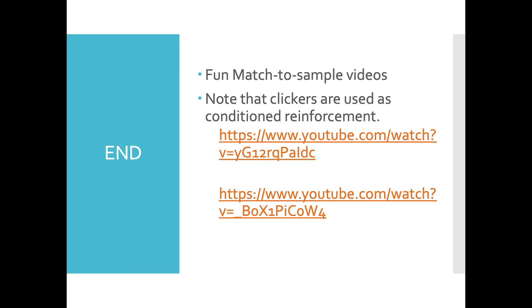The textbook also extends into other areas such as transfer of function and contextual control, which we won't review here, but I encourage you to read the chapter. There's enough to spend time with just on stimulus equivalence. I'll also post some links presenting fun applications of stimulus equivalence and equivalence-based instruction with animals — I believe they're dogs — which might give you ideas for a behavior change project. Definitely watch those. Have a good week.